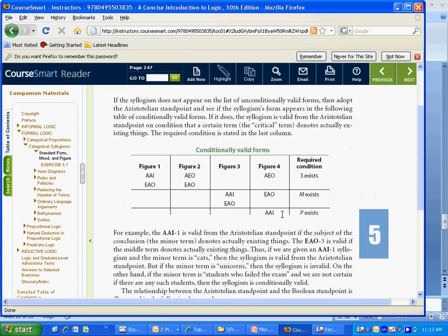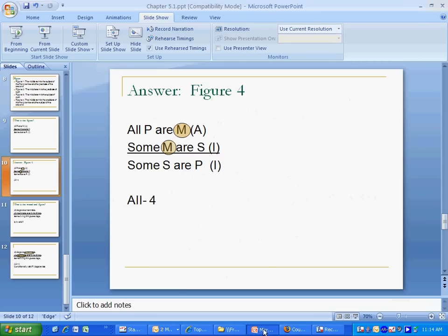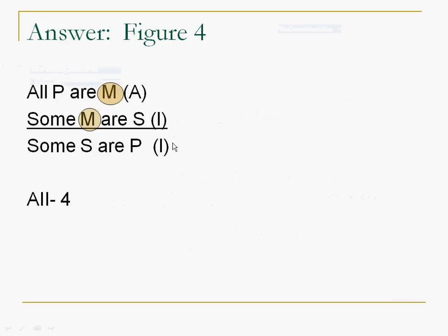So now we're going to go to conditionally valid forms. We find that AII is also not there. So what that means is that AII, figure 4, is invalid. One mistake that people make is they go and they try to find AII, and they decide that it's got to be figure 1 because that's a valid one. But in this case, that is incorrect. It's AII, figure 4, and that's invalid because we can't find it.